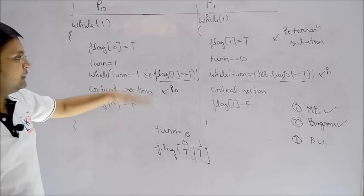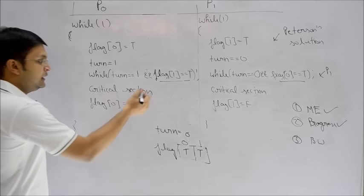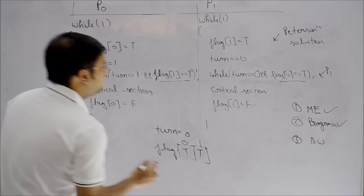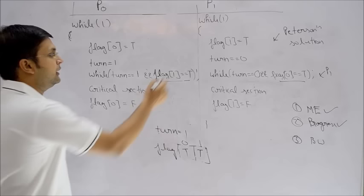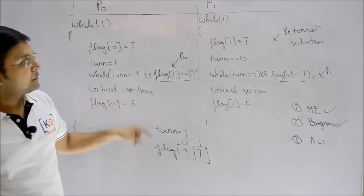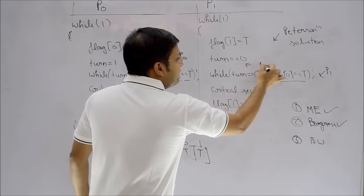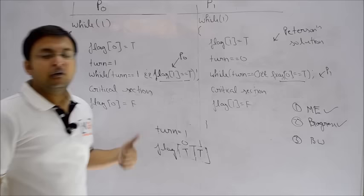When P0 exits the critical section, it sees that P1 has already requested entry. So P0 sets flag[0] = false first, and then tries to re-enter by setting flag[0] = true and turn = 1 again. But now the while condition is: turn == 1 true AND flag[1] true — both true — so P0 is stuck and cannot re-enter. Control goes to P1. P1 checks: turn == 1, but flag[0] is true — wait, turn is 1 so turn == 0 is false — false AND true is false, so P1 enters the critical section.